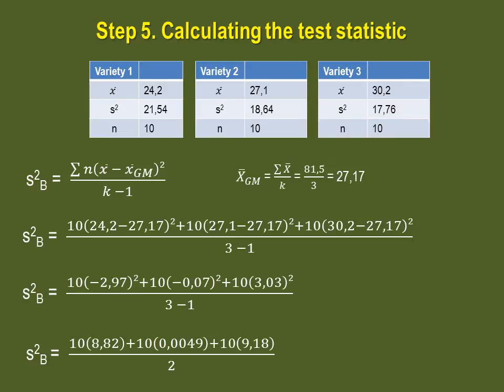So simplified just a little bit, this is what you get. Simplified further, this is what you get. And ending up even more simplified to 180.049 divided by 2, which will give you a between sample variance of 90.03.